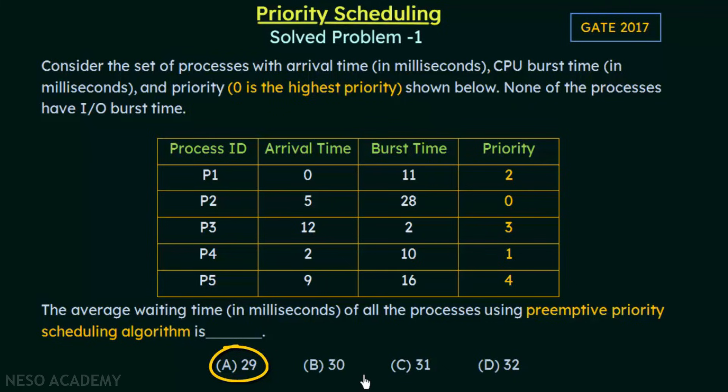That is how you calculate the average waiting time for a preemptive priority scheduling algorithm. Always keep in mind that when solving these kinds of problems, the most important thing is to form the Gantt chart correctly. Once you have the Gantt chart, the rest becomes very easy. I hope this was clear — thank you for watching and see you in the next one.